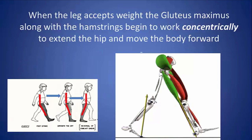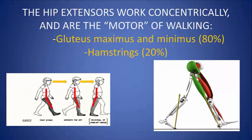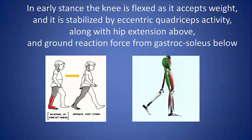When the leg accepts weight and the foot becomes flat, the gluteus maximus, along with the hamstrings, begin to work concentrically to extend the hip and move the body forward in space. The hip extensors consist of the gluteus maximus and minimus, which constitute 80% of the hip extension strength, and the hamstrings, which constitute 20% of the hip extensor power. In early stance, the knee goes into a slight amount of flexion to act as a shock absorber and to diminish the vertical oscillation of the center of mass. During this phase of flexion, it is stabilized by the eccentric activity of the quadriceps above, as well as from the ground reaction force of the gastrosoleus below.